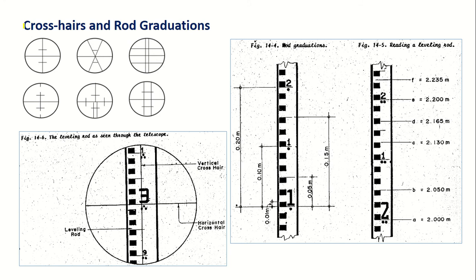Looking through the telescope of the leveling instrument, you will see crosshairs. There are different designs of crosshairs — the simplest has just a basic cross. Some instruments have additional stadia hairs. These stadia hairs are used in stadia leveling, while for ordinary leveling only the center crosshair is used. For example, if the upper stadia hair hits one reading and the lower hits another, the center horizontal crosshair reading might be 3.0.